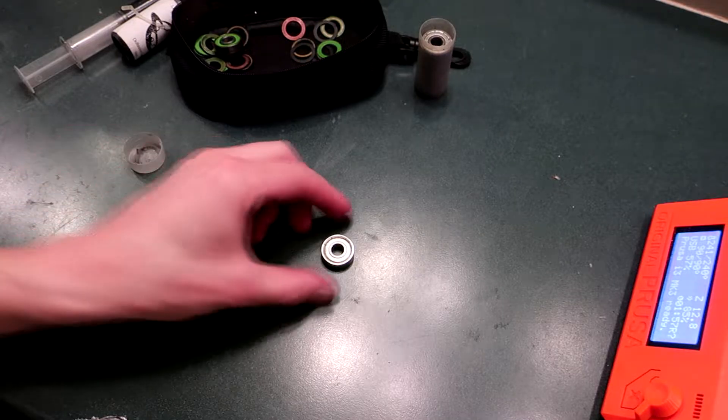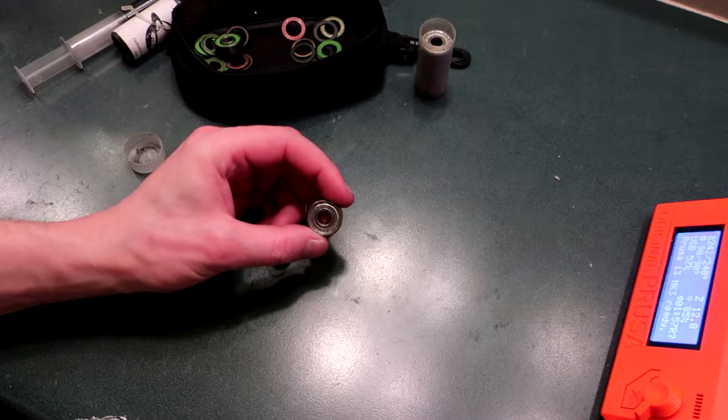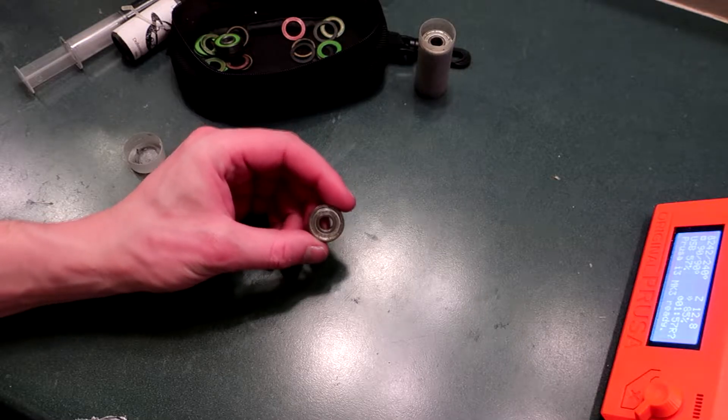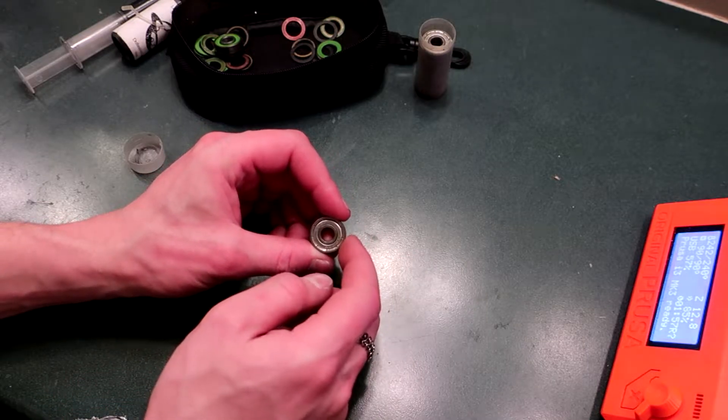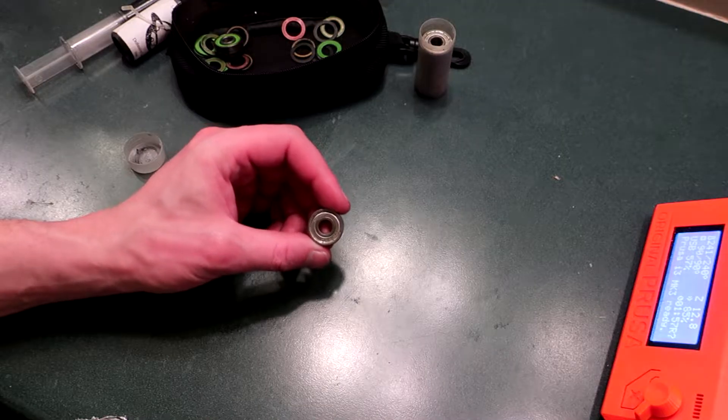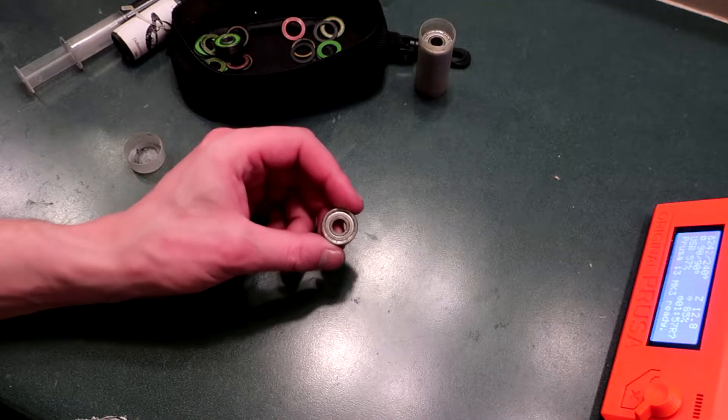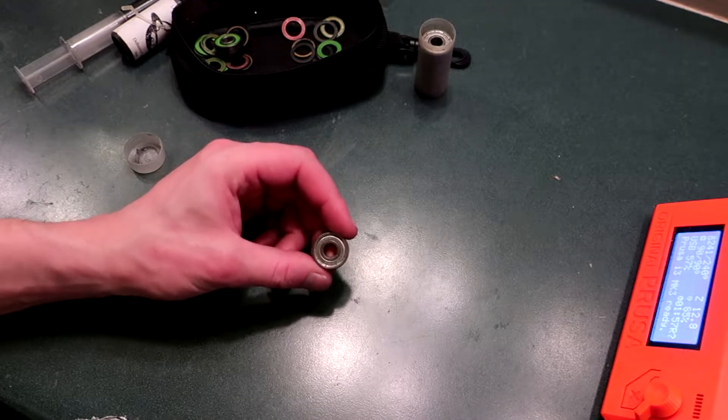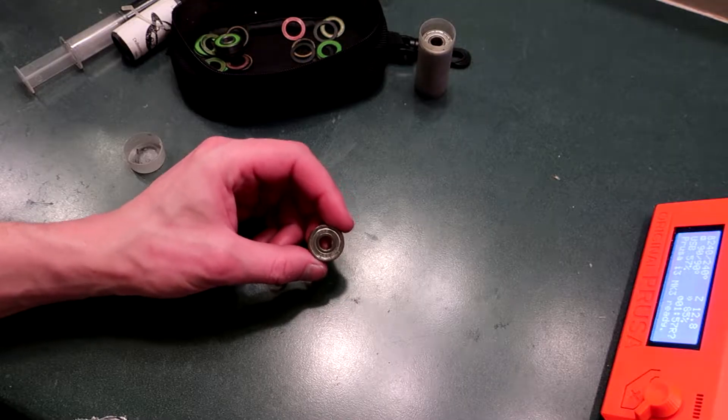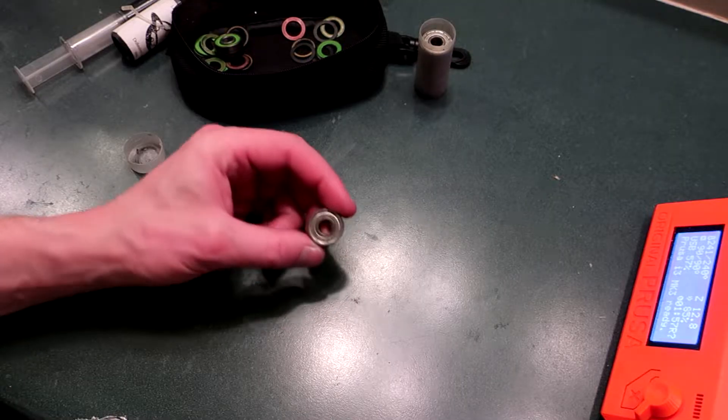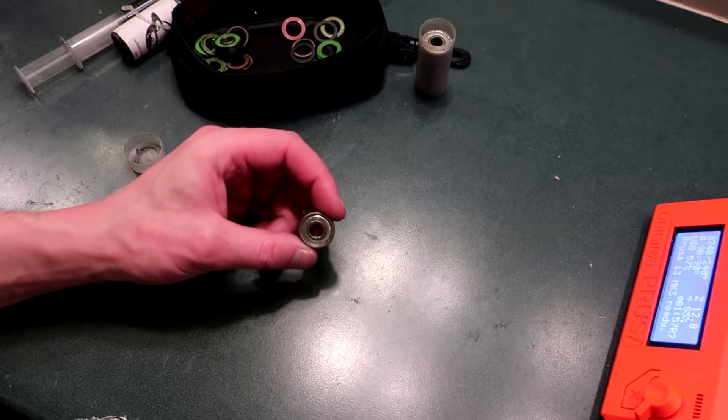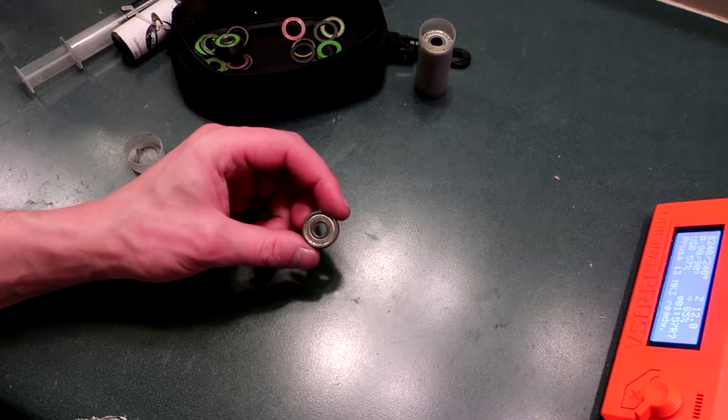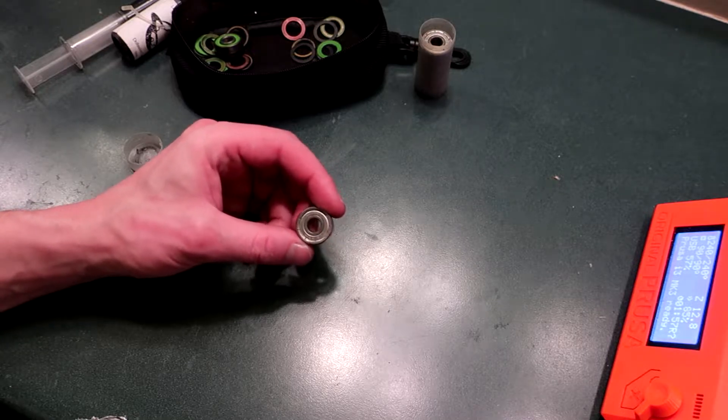Just because you have bearings that have crimped-on shields doesn't mean you have to do anything about it. You only need to do anything about it if you want to clean them or maintain them. But there's nothing wrong with just using them as they are until they're done and then just throwing them out.